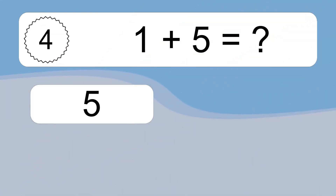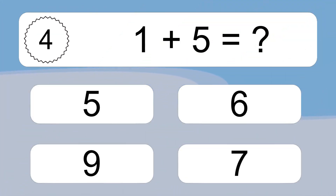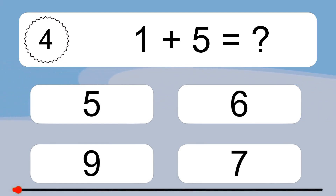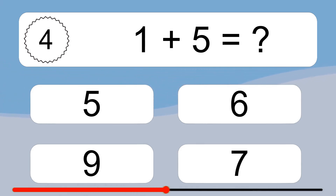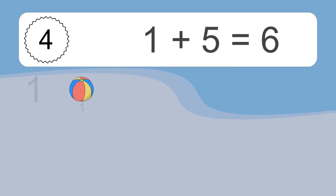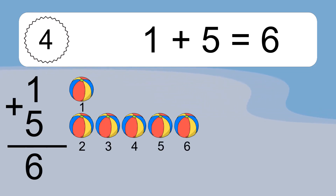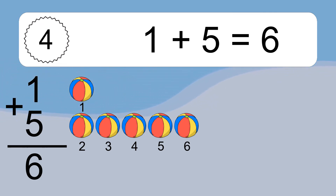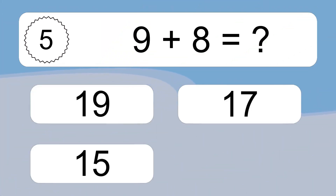1 plus 5 equals what? 1 plus 5 equals 6. Let's count it: 1, 2, 3, 4, 5, 6.